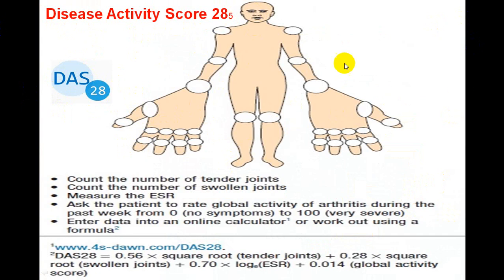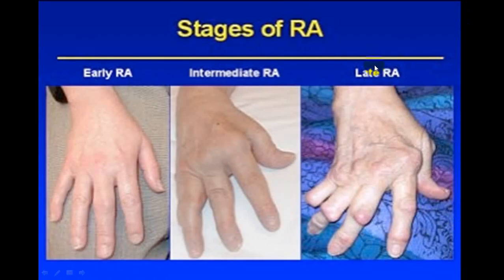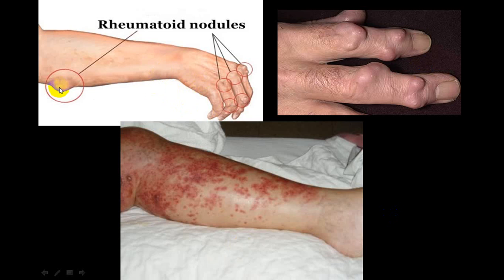The DAS score counts the number of tender joints, swollen joints, ESR, and global activity of arthritis. In an early stage there is mild swelling; in an intermediate stage, mild arthritis with slight deformity; in a late stage, all deformities — swan neck, boutonniere, and Z-deformity — are present. Rheumatoid nodules can also be seen along with skin changes.